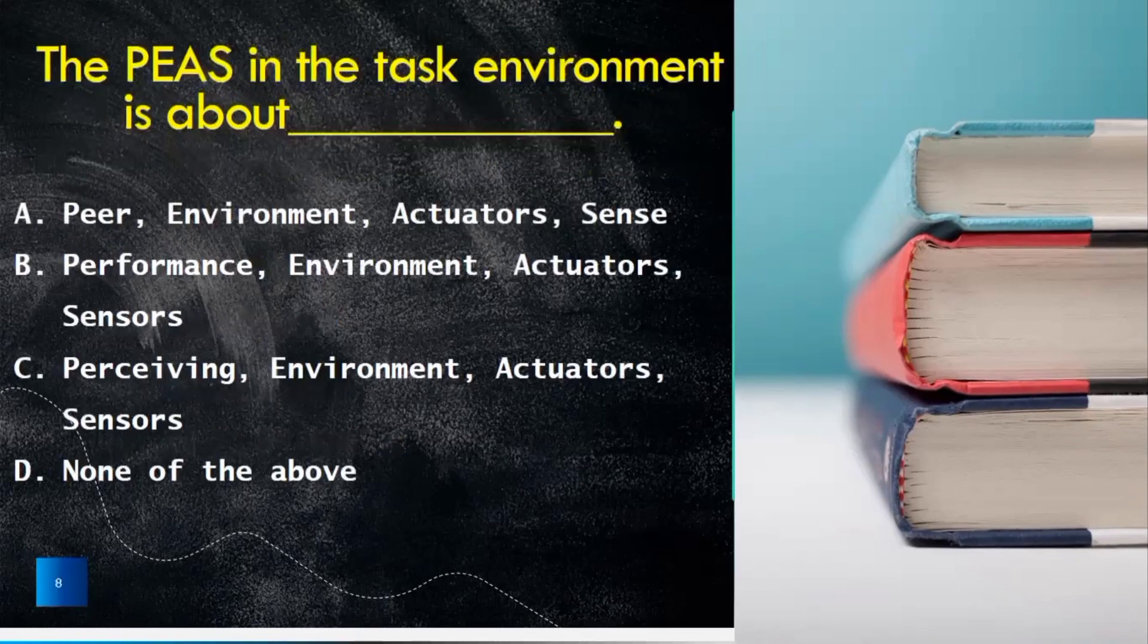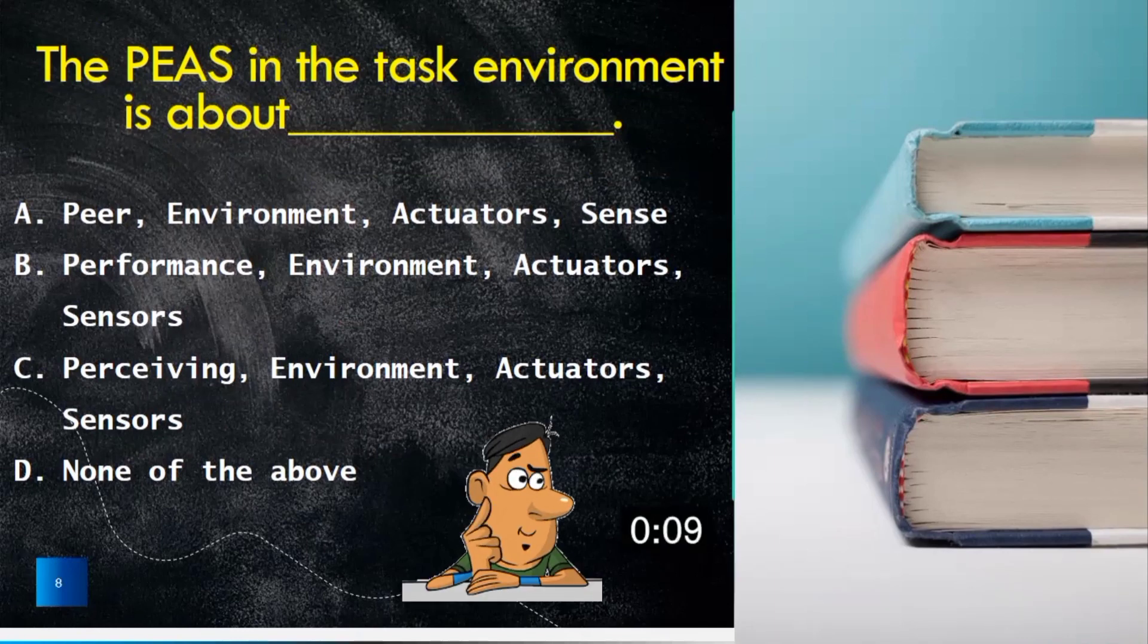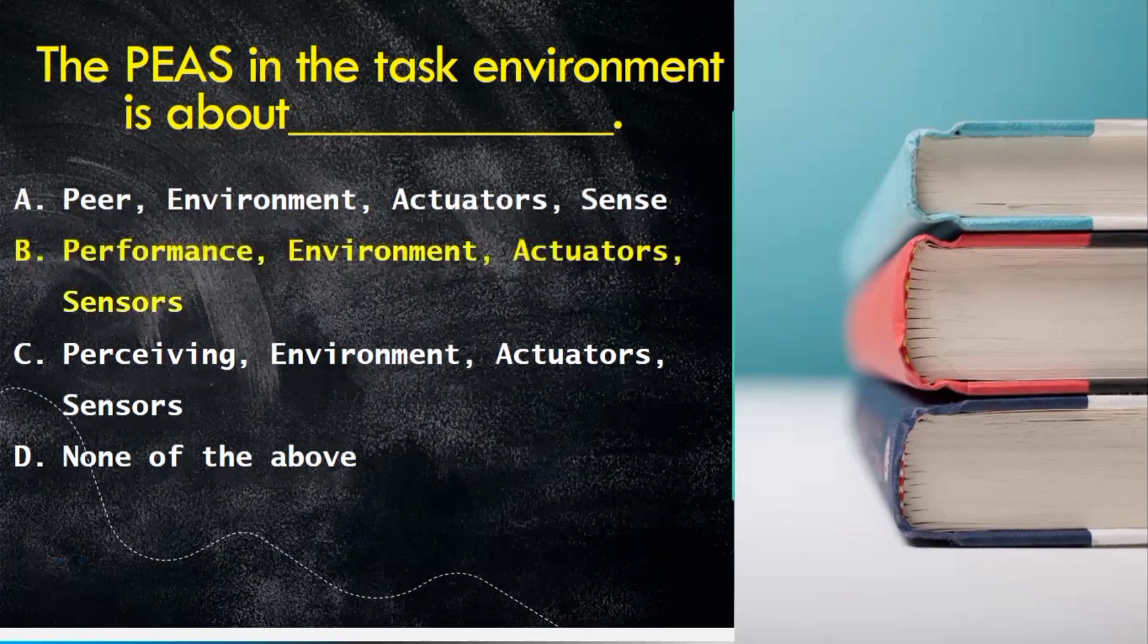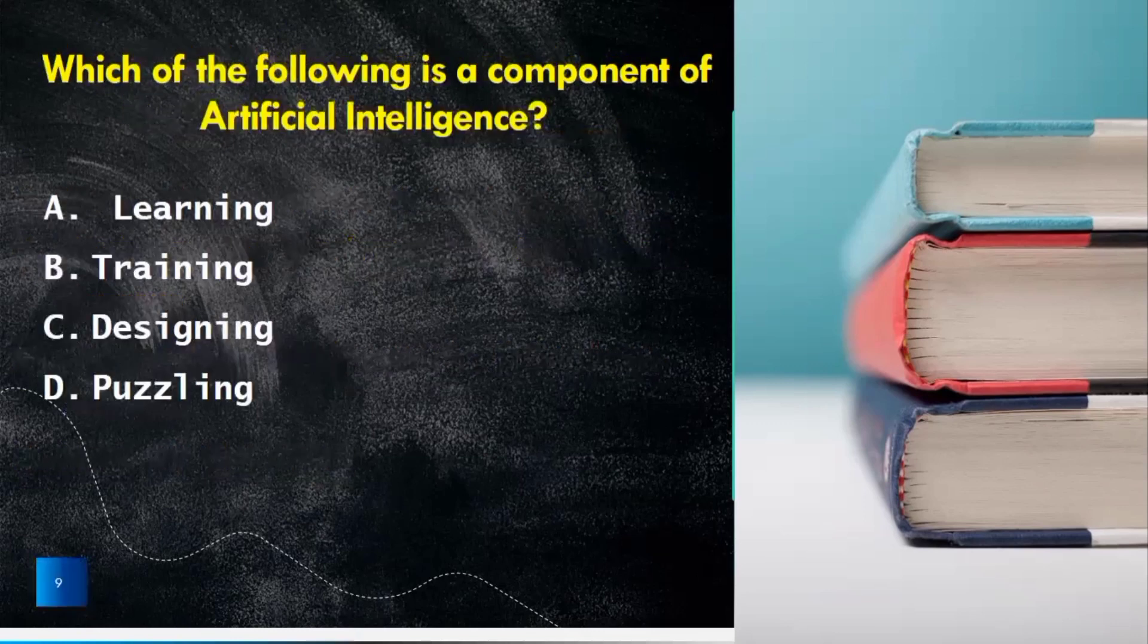Another question is the PEAS in the task environment is about A. Peer, environment, actuator, sense. B. Performance, environment, actuator, sense. C. Perceiving environment, actuator, sense. D. None of the above. The true answer is B. P stands for performance, environment, actuator and sensors.